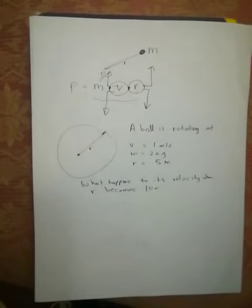So we have this problem right over here. A ball is rotating with a velocity of 1 meter per second, its mass is equal to 2 kilograms, and its radius is equal to 5 meters. What will happen to the velocity when the radius becomes 10 meters?